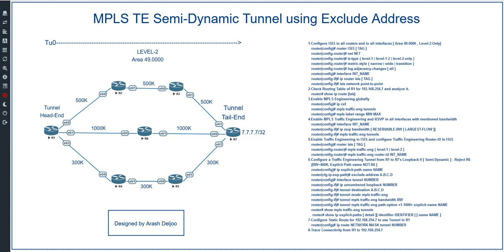In this video I'm going to talk about another method for configuring the path option in MPLS traffic engineering. In previous videos we configured traffic engineering tunnels with two path options: explicit path and dynamic path. Here I'm going to talk about the semi-dynamic path option.